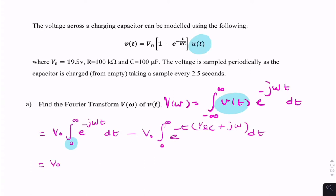So it's V0 into e to the minus j omega t divided by minus j omega from 0 to infinity minus V0 times 1 over 1 over RC plus j omega from 0 to infinity.